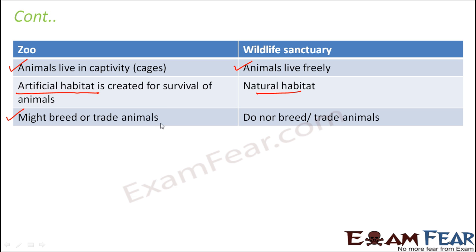Zoos may also breed or trade animals. For example, circus companies take animals like elephants, lions, and tigers from zoos. Forceful breeding of animals also takes place so that smaller animals are born and can be used to entertain visitors. So forceful breeding and trading of animals happen in zoos. Nothing like this happens in a wildlife sanctuary, because it is a natural place for animals and nobody can bother or disturb them.